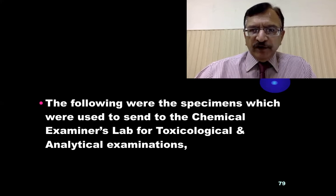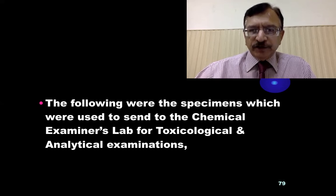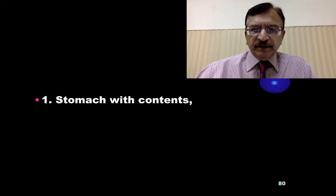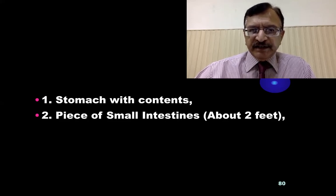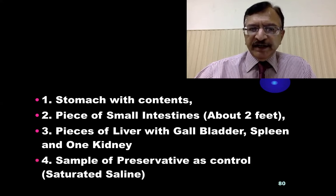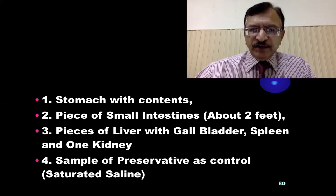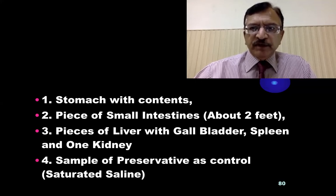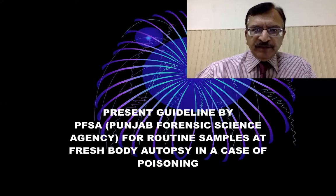The following were the specimens routinely sent to the chemical examiner's lab for toxicological and analytical examination: stomach with its contents, a piece of small intestine about two feet, a piece of liver with gallbladder, spleen, one kidney, and a sample of the preservative as control. For toxicological analysis, saturated saline is used as the control. These were the routine samples previously sent for chemical analysis.